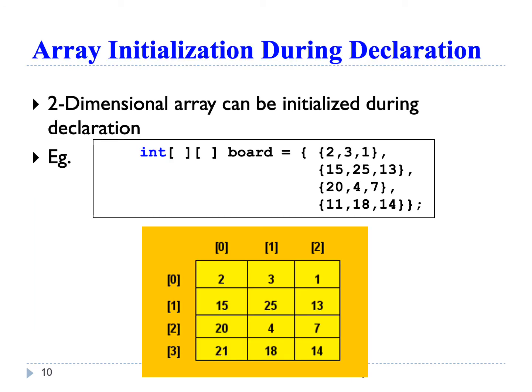Similar to one-dimensional arrays, we can initialize a two-dimensional array during declaration using braces. But because it's two-dimensional, we need several braces to separate the rows. We start with opening braces, then another set of braces for the first row and close it. For each row, we write a comma to separate them.